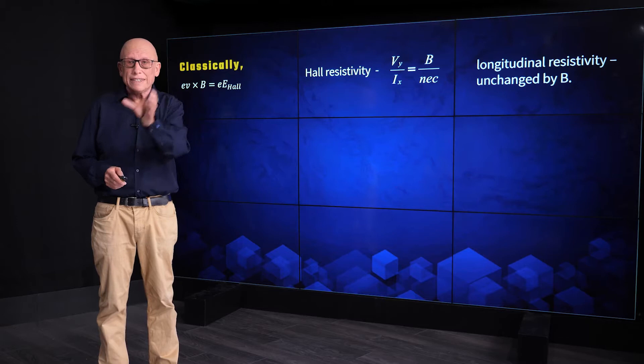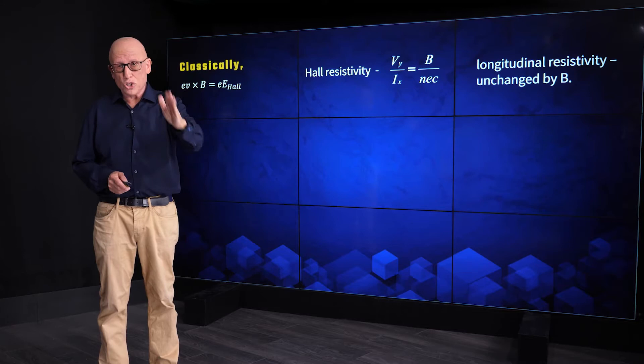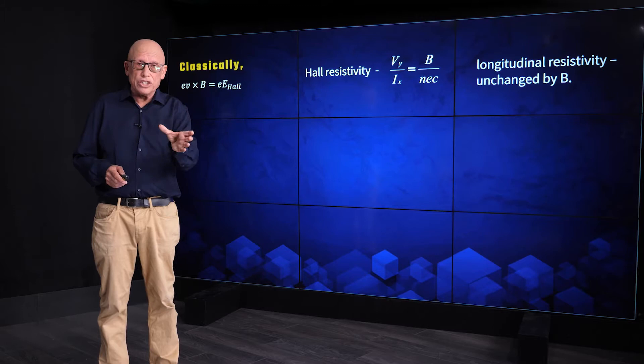The Hall voltage is supposed to cancel the Lorentz force. The Lorentz force is proportional to the magnetic field. Therefore, we expect the Hall resistivity to be simply proportional to the magnetic field.